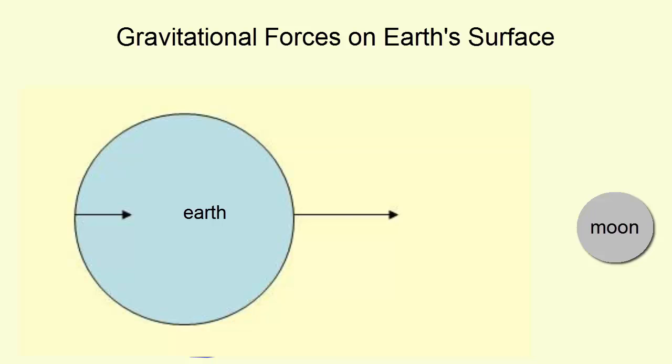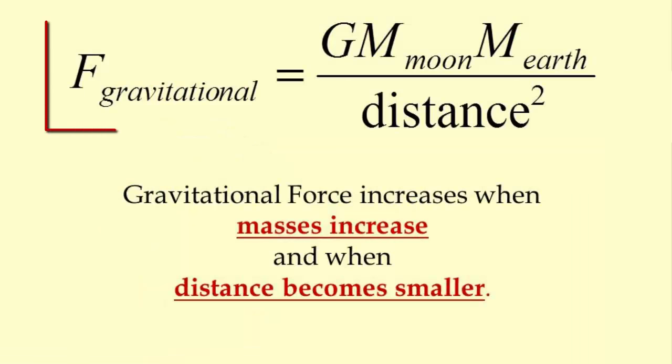Gravitational force is stronger the closer two objects are together, and weaker the further away they are. Why? The gravitational force experienced between any two objects is equal to a very small constant number G, known as the gravitational constant, multiplied by the masses of both objects and divided by the distance between them squared.